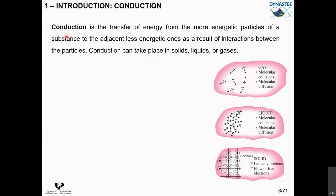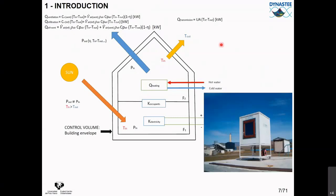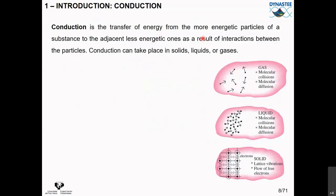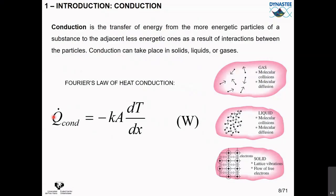The UA value considers three heat transfer mechanisms. First, conduction: the transfer of energy from more energetic particles of a substance to adjacent less energetic ones as a result of interaction between particles. Conduction can take place in solids, liquids, or gases, and is calculated with Fourier's law. Fourier discovered this mathematical expression. Conduction is essentially how heat moves within solids, but also happens in liquids and gases. Through the solid part of the building envelope, we will have conduction.